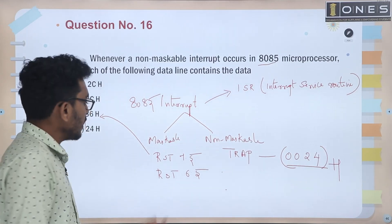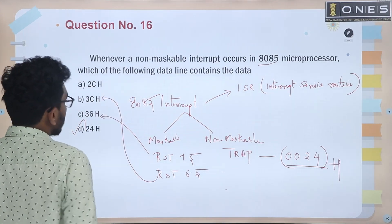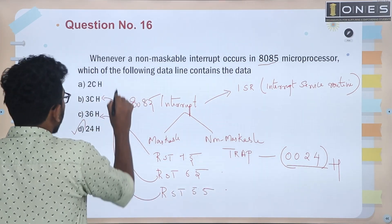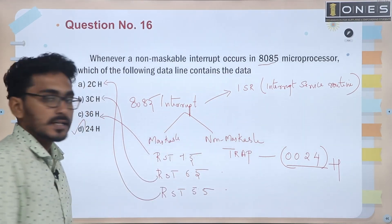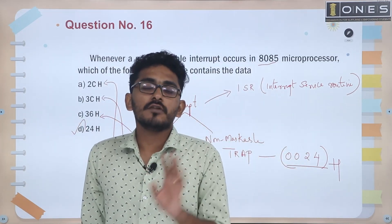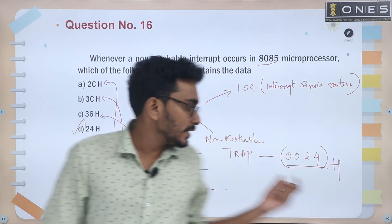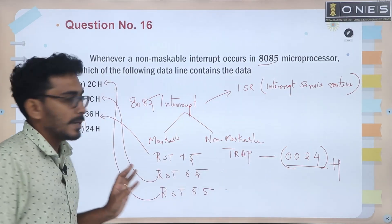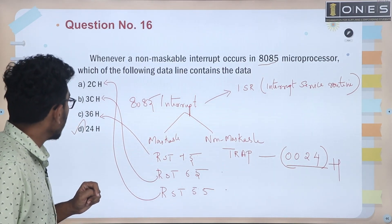Vectored interrupts include: TRAP (level triggered), RST 7.5 (edge triggered, address 3C), RST 6.5, and RST 5.5 (address 2C). Non-vectored interrupts include INTR. Interrupts are also classified as maskable vs non-maskable, and vector vs non-vectored.